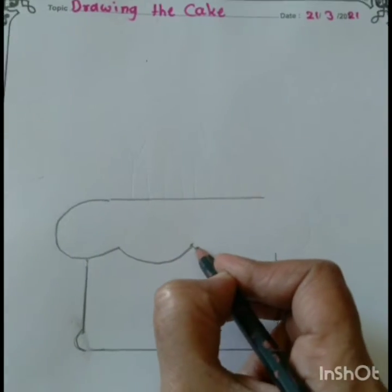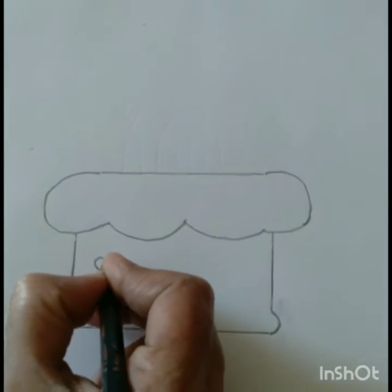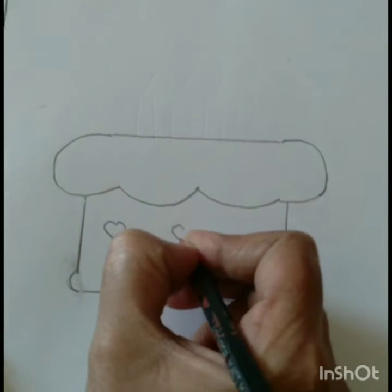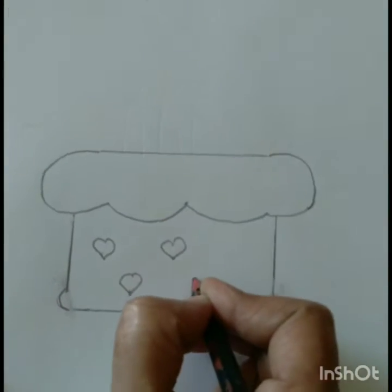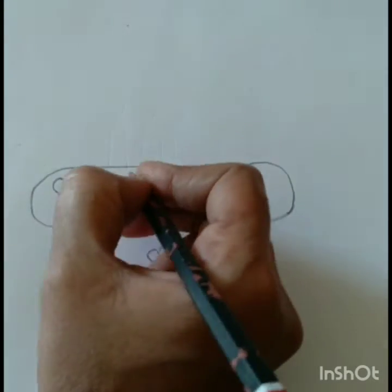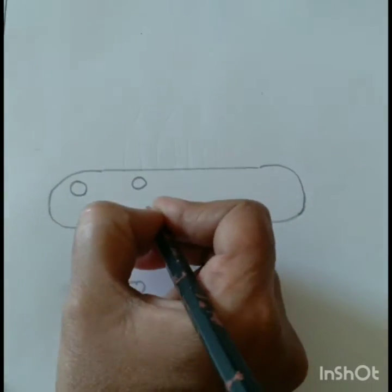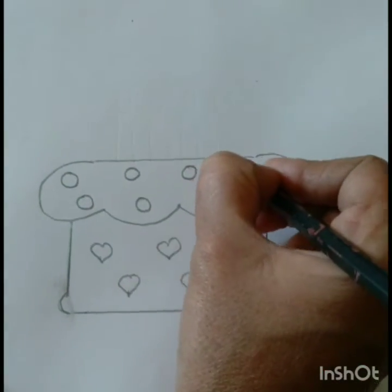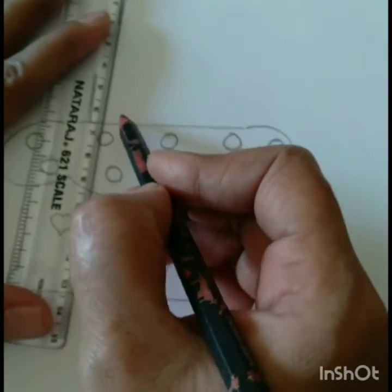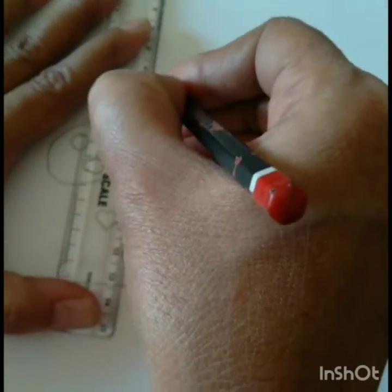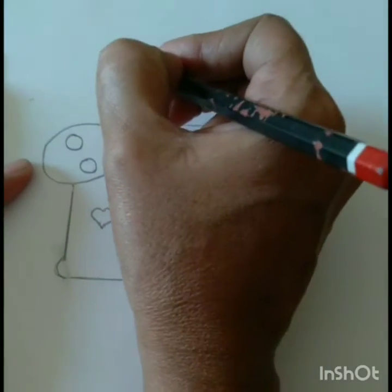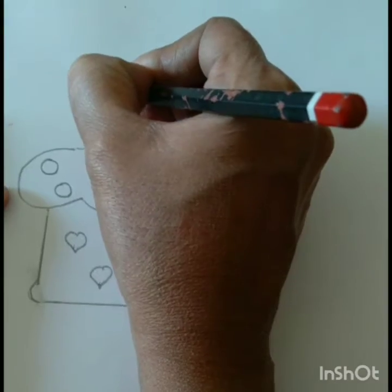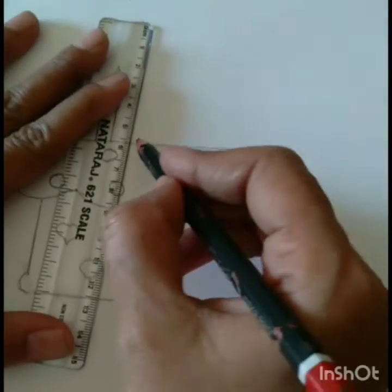This is the cream of the cake. Children, now we are drawing the heart shape and circle shape on the cake. Now we are drawing the candles on the cake, so draw a standing line with the scale.